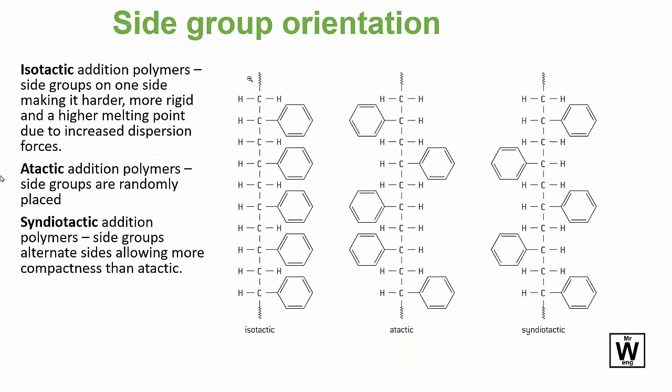You also need to know isotactic, atactic, and syndiotactic. Isotactic is all on the same side. Atactic is random. There are various words with an 'a' in front of them that mean a lack of—theist and atheist, students could think of some other words—so it's just random on either side. This one has the lowest melting point.